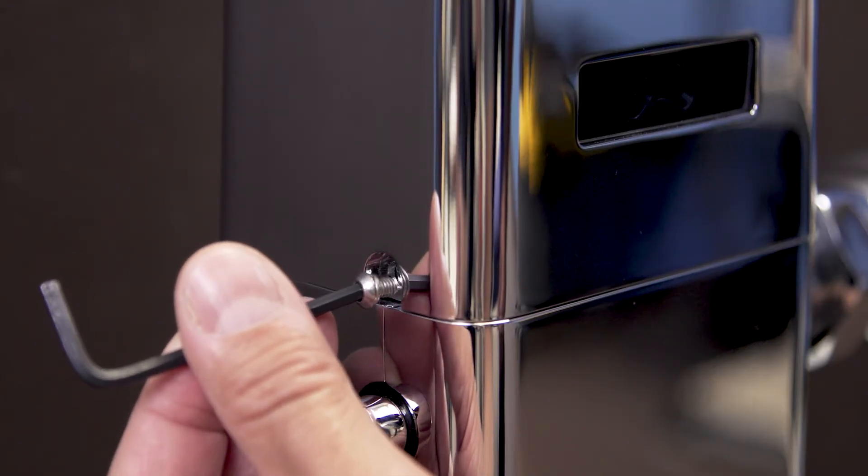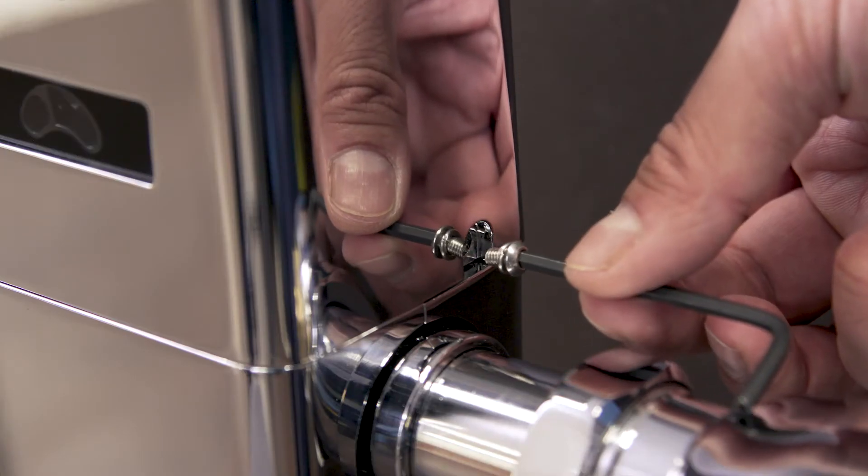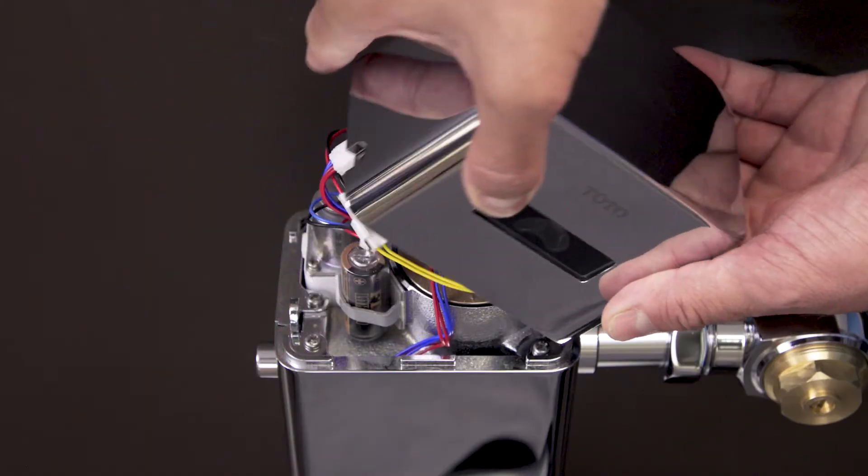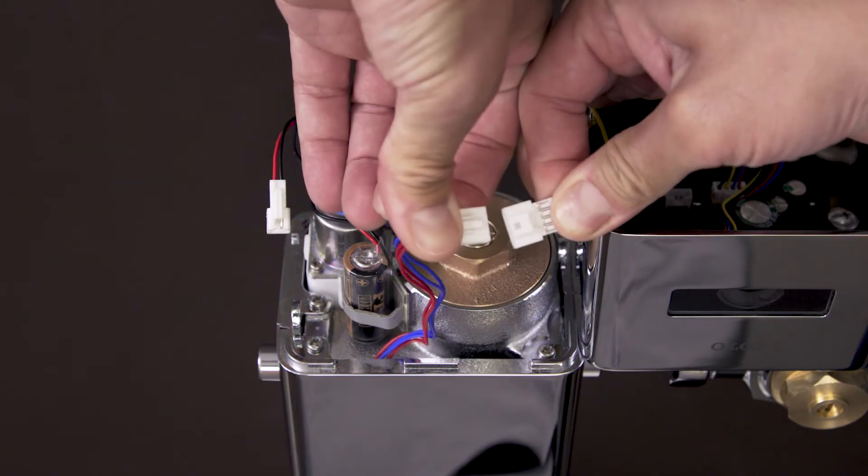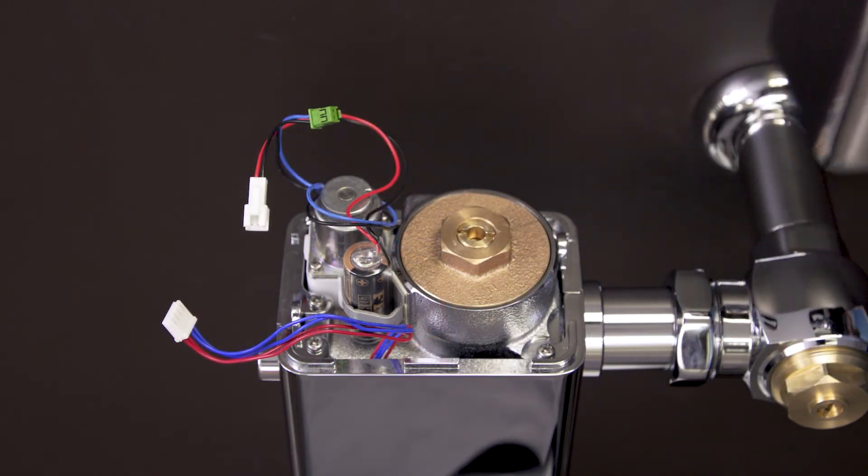Use the security hex wrench to loosen the top cover screws. Now lift up the cover and disconnect the wires. Unplug the battery, solenoid, and generator, then set the cover off to the side.